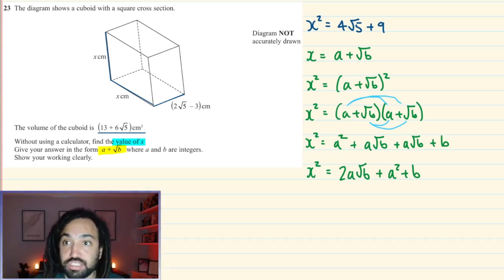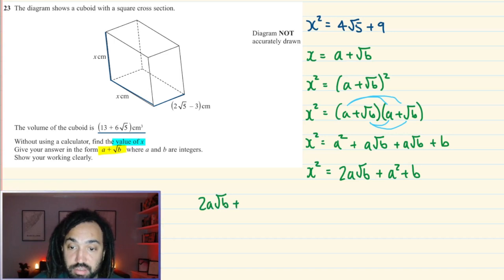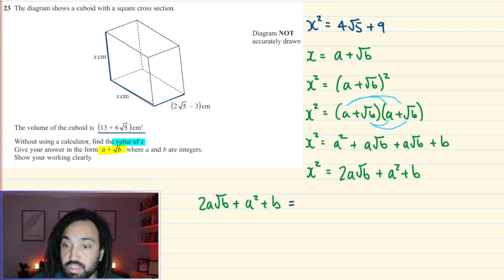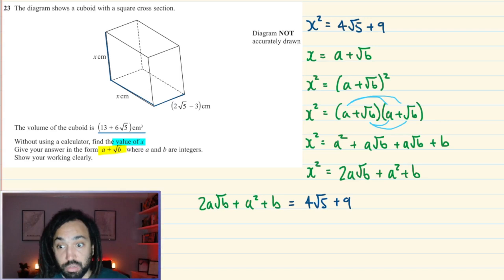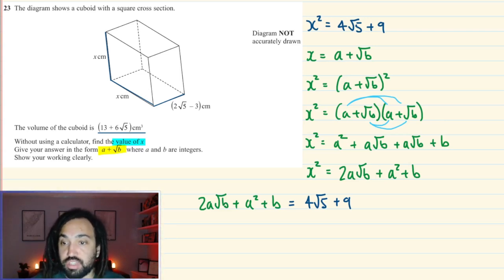So now I can compare it to my expression that I have for x². So I can say that 2a√b + a² + b is equal to 4√5 + 9. Now we're going to use this trick called comparing coefficients. Because if these two things are going to be equal, it means the rational numbers will equal each other on both sides of the equation. And also the irrational, i.e. the surd parts, will also equal each other on both sides of the equation. So let's look at the surd parts on the left side, we have this. And the surd parts on the right side, we have this. So these will equal one another.